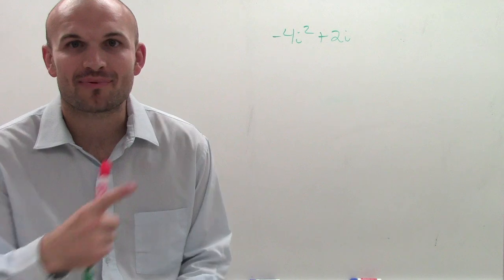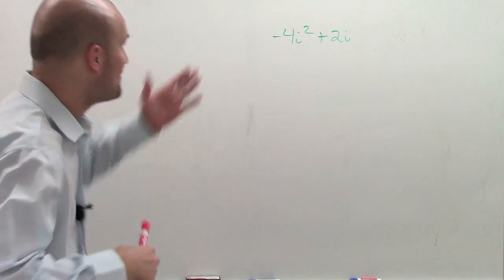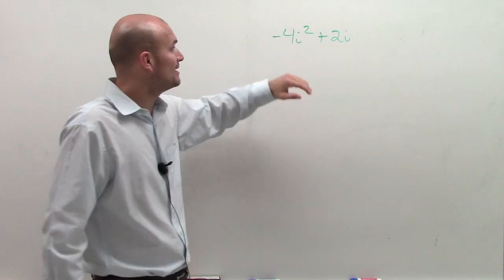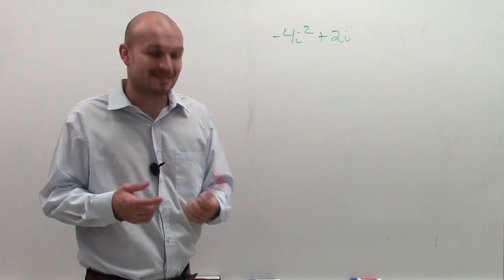So what they're asking is the problem right behind me. They want us to solve in standard form. So I have negative 4i squared plus 2i, and they want us to put it in standard form.